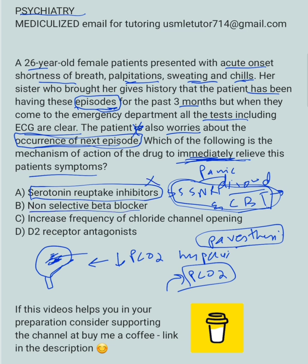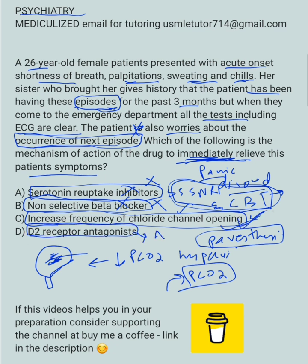Non-selective beta blockers such as propranolol are for performance-type anxiety — if a patient is giving a presentation and is nervous, they can take propranolol. It won't help with the panic attack here. Then we have increased frequency of chloride channel openings — this is the mechanism of benzodiazepines, and this is the right answer. The last option is a D2 receptor antagonist, which is an antipsychotic used for schizophrenia, but has no value here. So remember: for immediate symptoms, benzodiazepine; for long-term maintenance, SSRIs, SNRIs, and cognitive behavioral therapy.